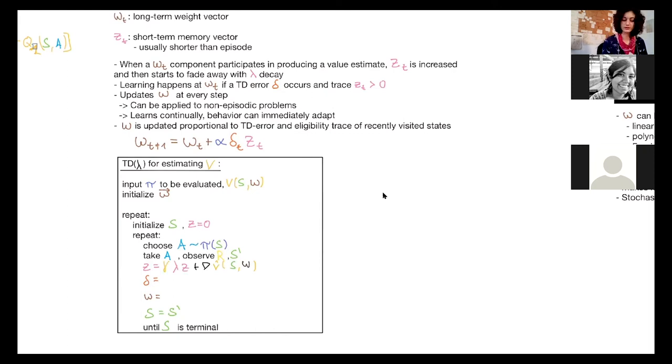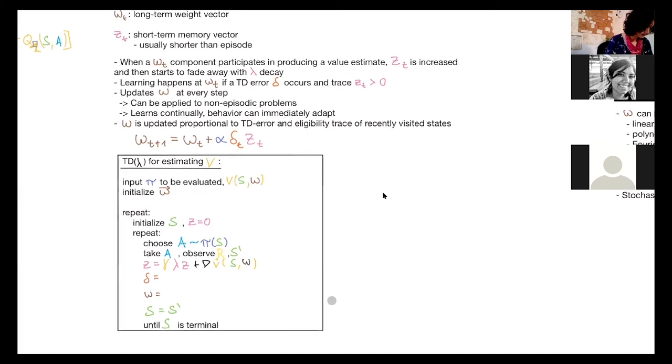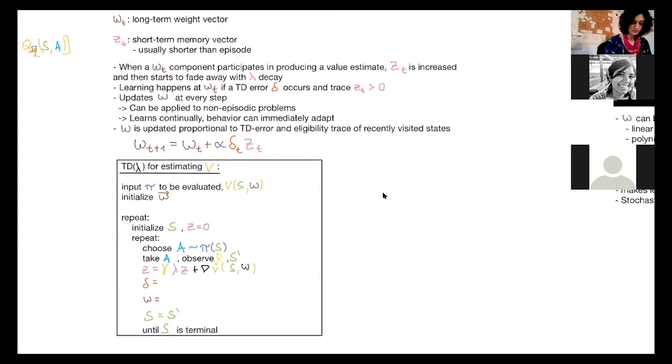So the eligibility trace is increased by the value gradient and the components of the weight vector that participated in producing the value estimates are updated. So let's see how the td error is calculated. This is very similar to what we already know.